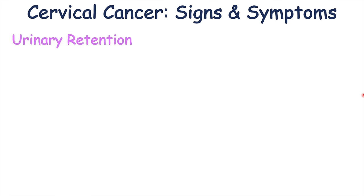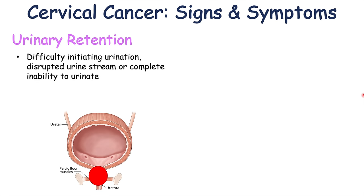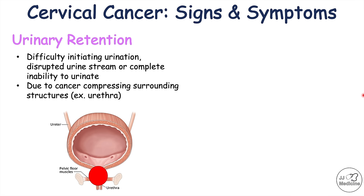Urinary retention is another later-stage finding, characterized by difficulty initiating urination, a disrupted urine stream, or a complete inability to urinate. A patient may feel the urge to urinate but be unable to start, experience an unsteady stream, or be completely obstructed. This is due to the cancer compressing surrounding structures, including the urethra — in some cases causing complete compression so the patient cannot urinate at all.